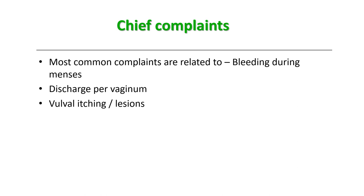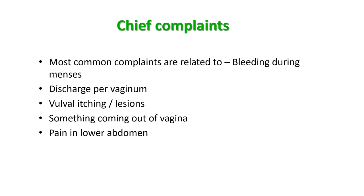Another complaint commonly seen in elderly patients is something coming out of the vagina, which is suggestive of uterovaginal prolapse, or it can be an isolated cystocele or rectocele. Pain in the lower abdomen — acute or chronic PID or pelvic inflammatory diseases — is generally associated with this. Even a patient with urinary tract infection can come with a complaint of pain in the lower abdomen, painful coitus, or dyspareunia, which can be superficial or deep.